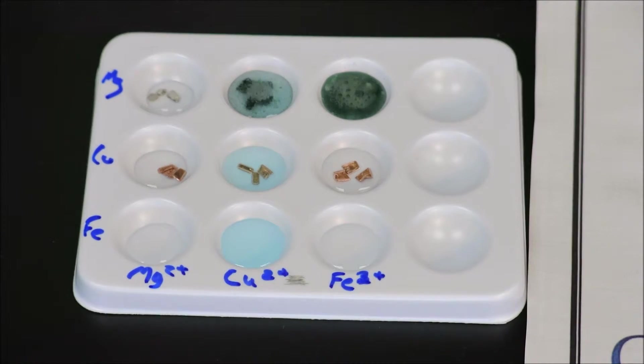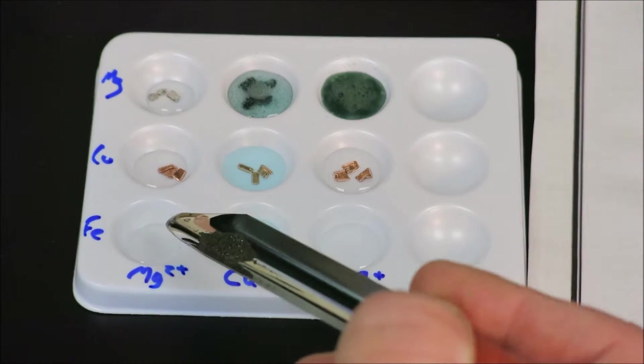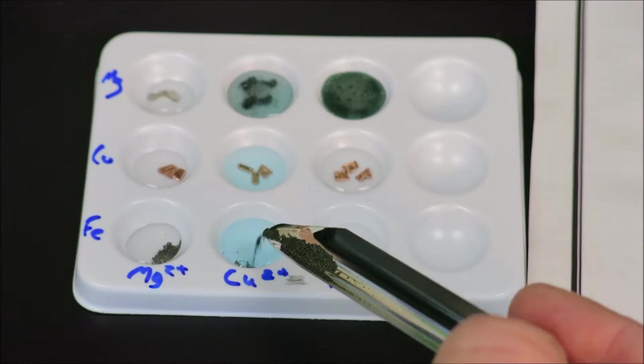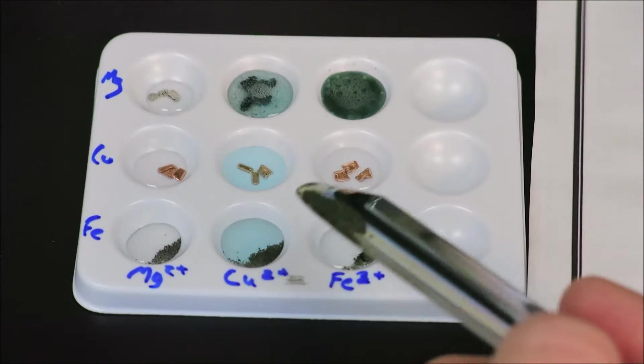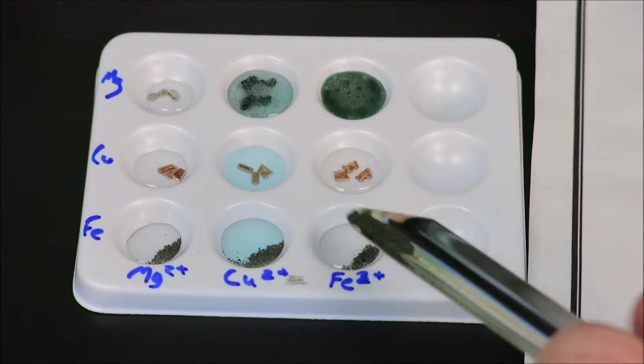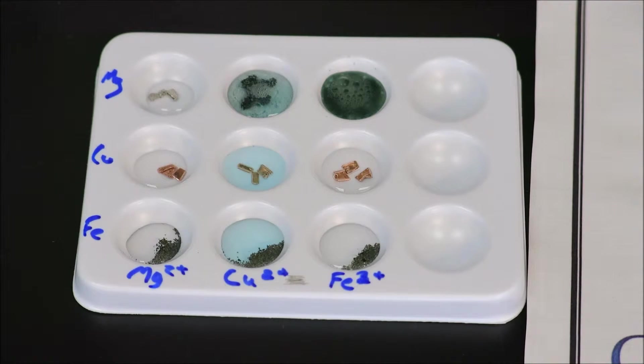And finally, we'll be placing iron filings in the third row of wells. A small amount of iron filings. And then we observe for any reactions.